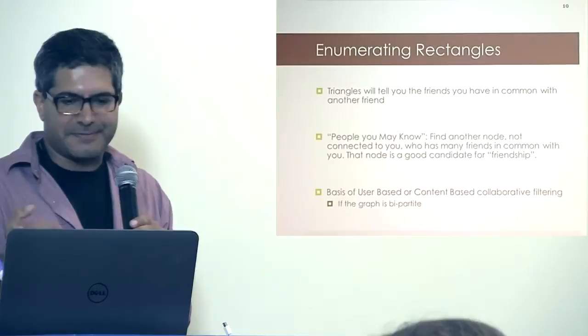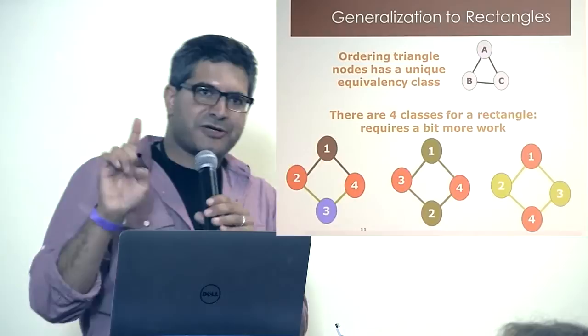Why would you care about triangles? We care about triangles because we're finding cliques — it's a measure of how clustered a community of nodes is. If I have a lot of triangles among my neighbors, that means many of my neighbors are connected to each other. You could generalize this, and that's a beautiful thing, from a triangle to a rectangle. It's a similar trick, but it needs a little more interesting consideration.